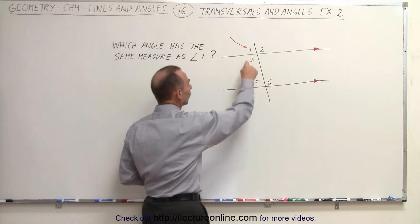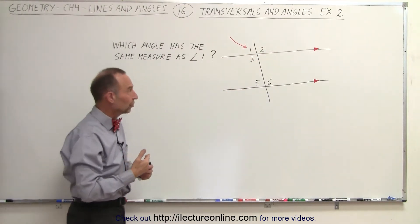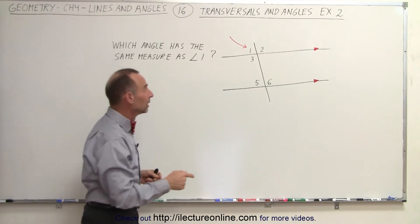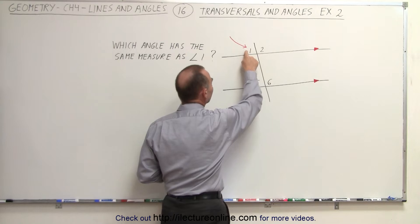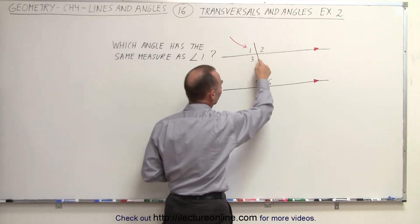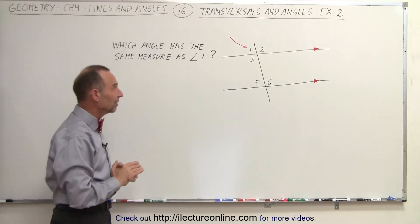First of all, angle 1 and angle 2 are supplementary. That means that the total measures add up to 180 degrees, and they can only be equal if angle 1 is 90 degrees, then angle 2 must also be 90 degrees. But by the picture here, we can see that angle 1 has a measure of less than 90 degrees, so they cannot be the same.